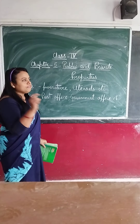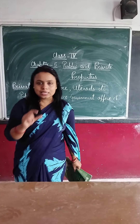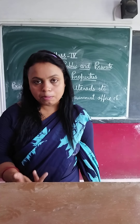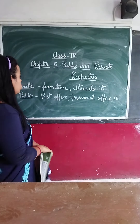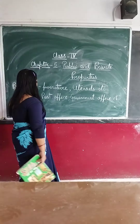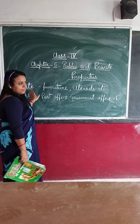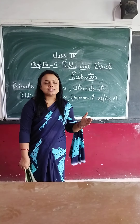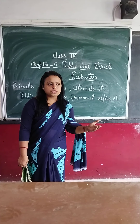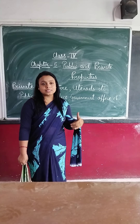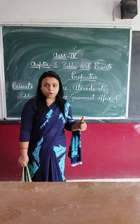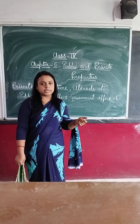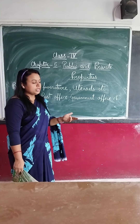In a very easy look, you can see what is private and what is public property. Private property includes your home furniture and your school furniture — these are your home properties and are called private property.